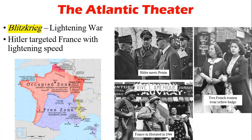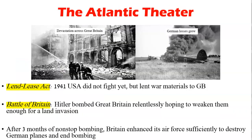Here we have what is known as Blitzkrieg — lightning war. It was a swift method of warfare meant to end the war quickly. Hitler targets France with lightning speed. Then we have the Lend-Lease Act of 1941: the U.S. didn't really want to get involved, just like World War I, so the U.S. would lend or lease supplies — not sell them — to any nation deemed vital to the defense of the United States. This way, the United States stayed neutral. We also talk about the Battle of Britain, which was July 10th to October 31st, 1940, and within it, the Blitz — September 7th, 1940 to May 11th, 1941.